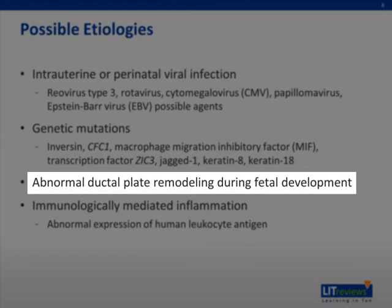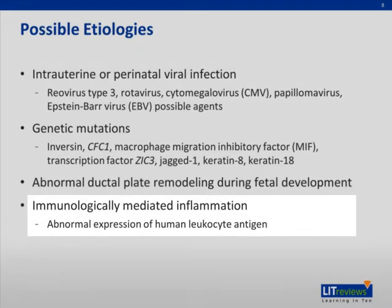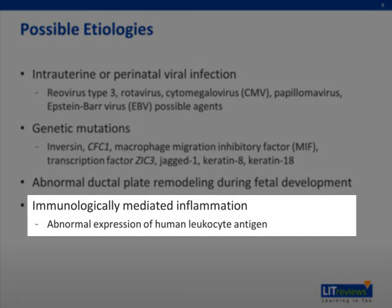Intrahepatic bile ducts are derived from primitive hepatocytes that form a sleeve or ductal plate around intrahepatic portal vein branches and associated mesenchyme in early gestation. Remodeling of the ductal plate in fetal life results in the formation of the intrahepatic biliary system. These findings suggest that nonsyndromic biliary atresia might be caused by a failure of bile duct remodeling at the hepatic hilum, with persistence of fetal bile ducts poorly supported by mesenchyme. Several studies have also investigated whether immunologically mediated inflammation might play a role, possibly due to abnormal expression of human leukocyte antigen.